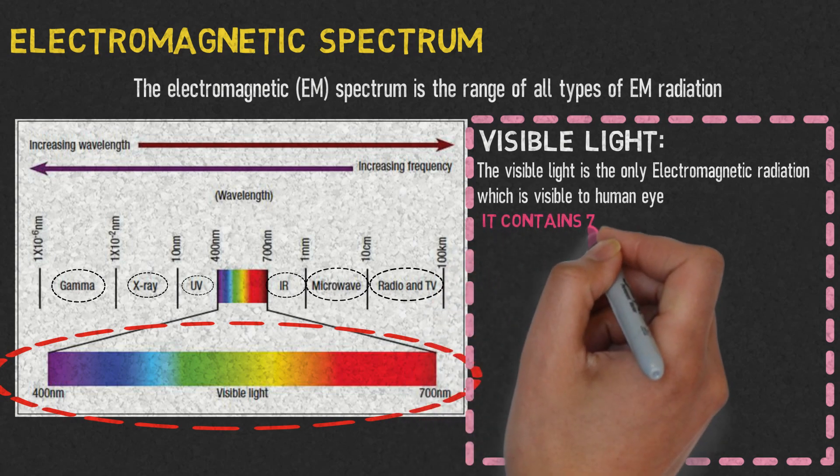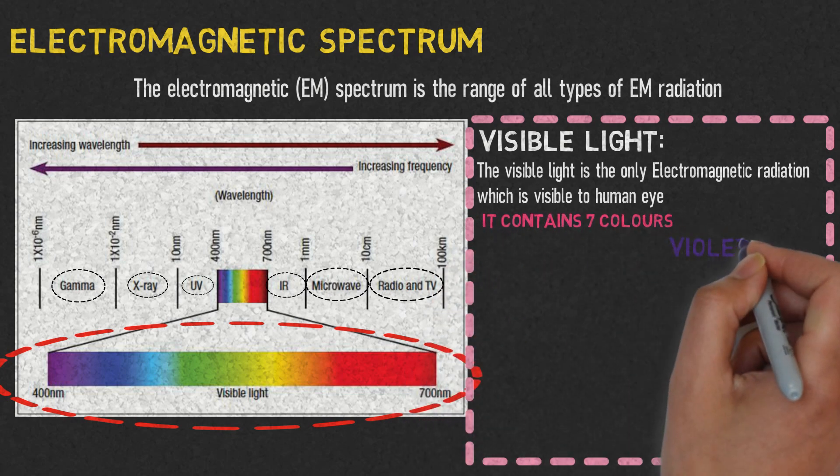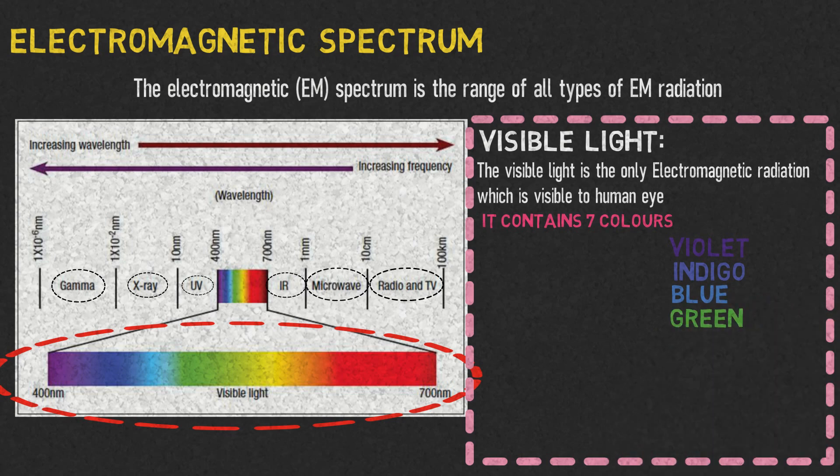It contains seven colors: violet, indigo, blue, green, yellow, orange, and red.